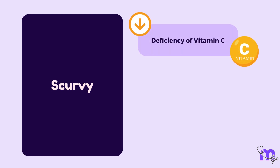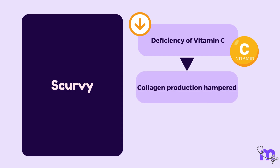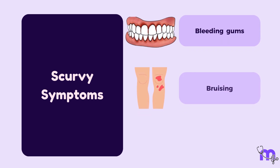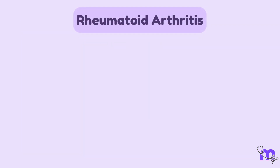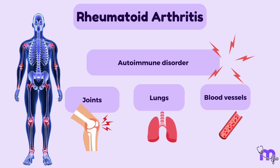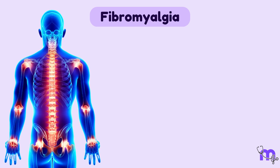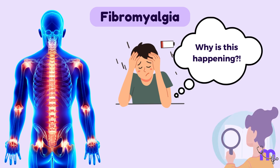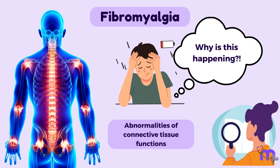Scurvy is a deficiency of Vitamin C, which is necessary for the synthesis of collagen. Without enough Vitamin C, the body is unable to produce strong connective tissue, leading to symptoms including bleeding gums, bruising, and joint pain. Rheumatoid Arthritis is an autoimmune disorder that primarily affects the joints but can also cause inflammation and damage to other connective tissues such as the lungs and blood vessels. Fibromyalgia is a chronic condition characterized by widespread pain and tenderness throughout the body, along with fatigue; some researchers believe it may involve abnormalities in the way connective tissue functions.